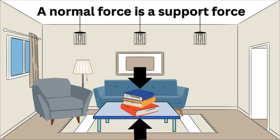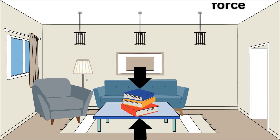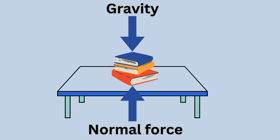Are there any forces acting on the book? Yes, the book will make or exert a downward force on the table. This force is gravity pulling the book downwards. But the book does not fall, so something must be pushing it up. This is called the normal force. We cannot see these forces at work.